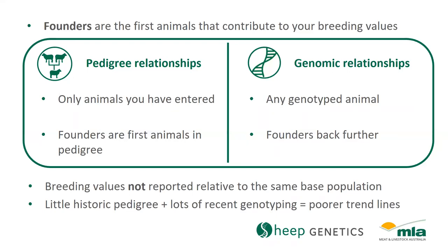When you have pedigree relationships, your founding population — the first animals that contribute information to your flock's breeding values — are the first animals in your pedigree. When you genotype animals, your animals can potentially have a genomic relationship with any animal in our genomic database. That means the first animals contributing information to your flock's breeding values could be a lot further back. Therefore, your breeding values might not be relative to the same base population.